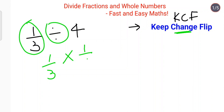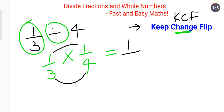Now when two fractions are multiplied, you multiply numerator by numerator: 1 into 1 gives you 1. And denominator by denominator: 3 into 4 gives you 12. So the answer is 1 upon 12 for dividing 1/3 by the whole number 4.